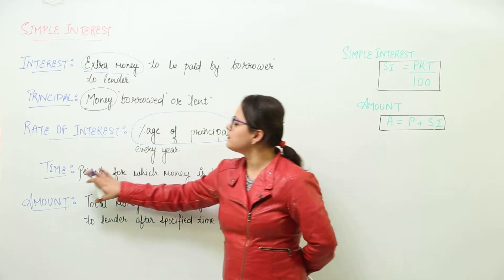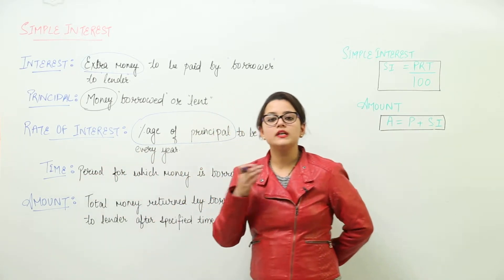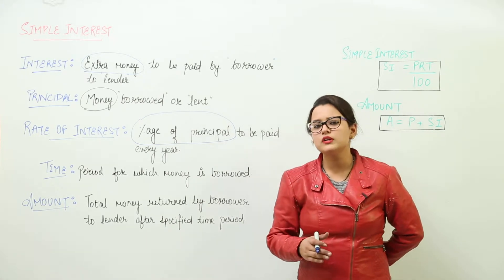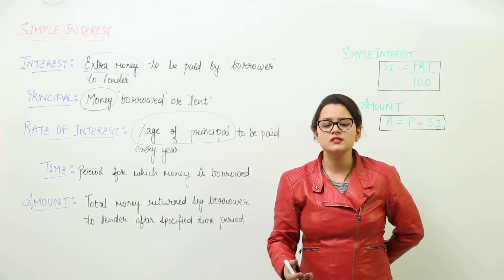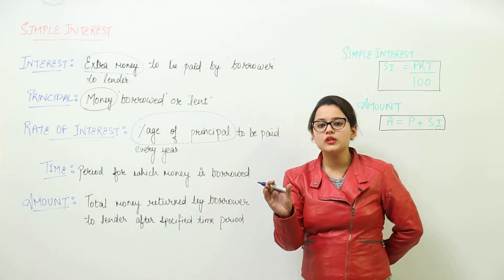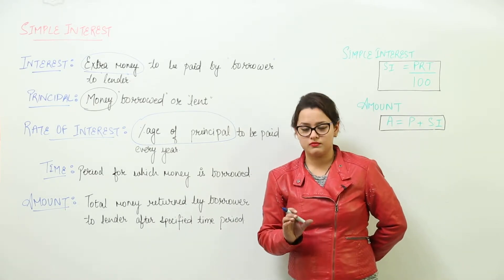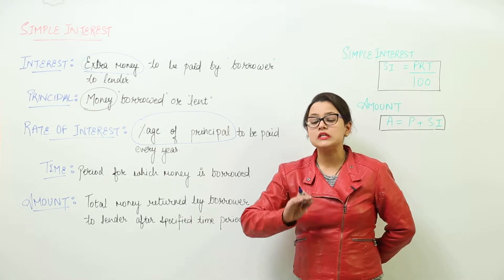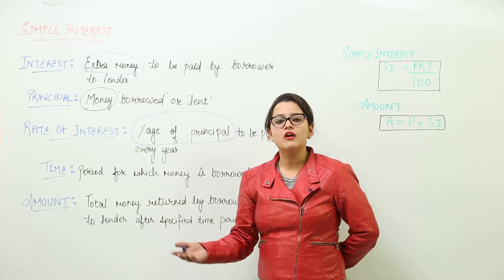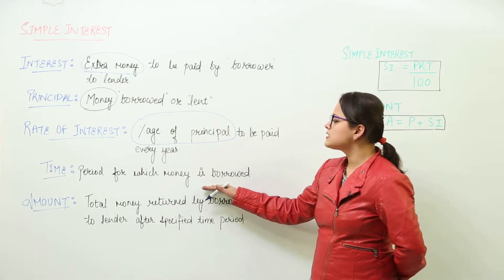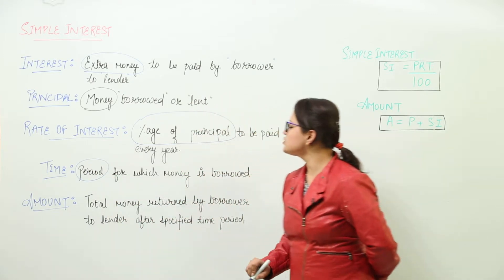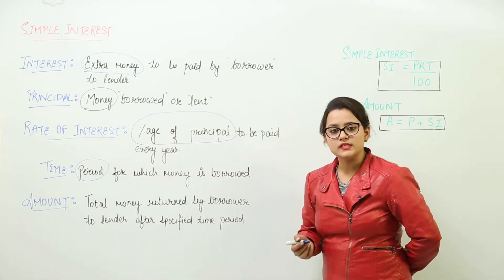The next is the time period. For how long did I borrow the money from my friend? Say for example, I have borrowed it for say some days, some years, it could be some months. So the amount of time I have taken from her, that I will be returning it back to her in say 6 months or in 1.5 years. That represents my time period. So it is the period for which the money will be borrowed or lent.